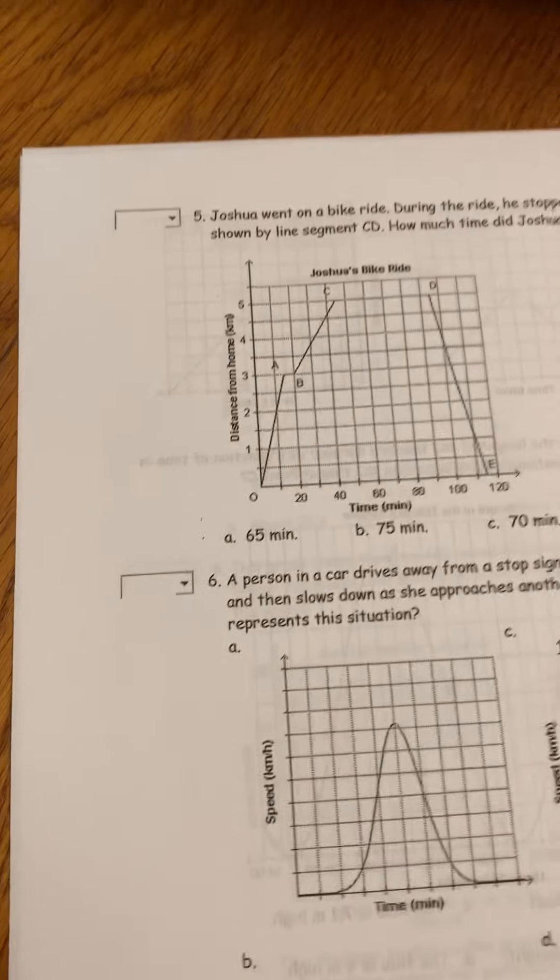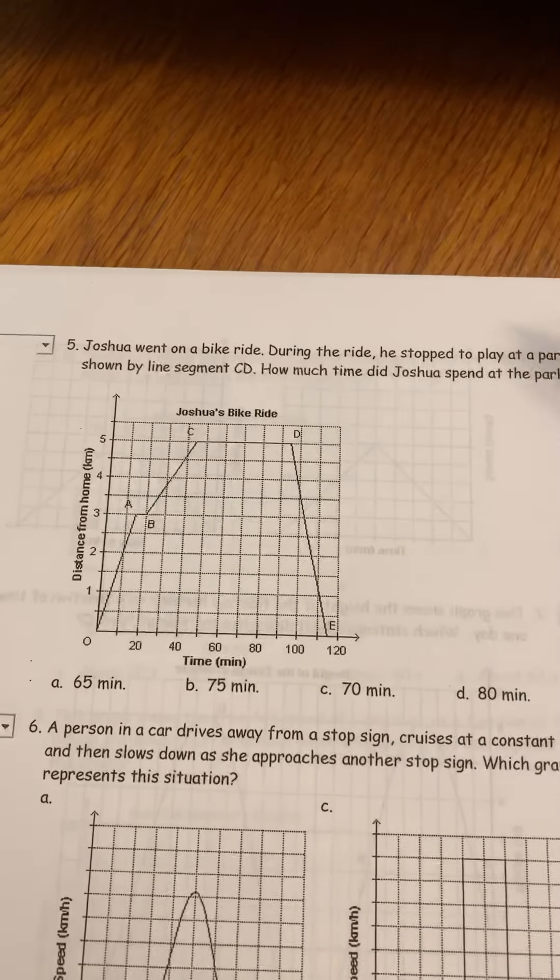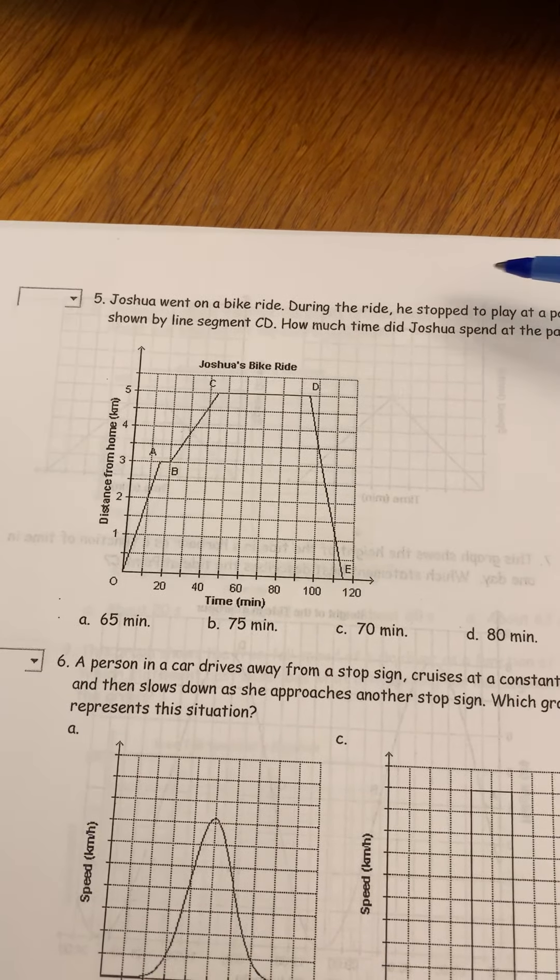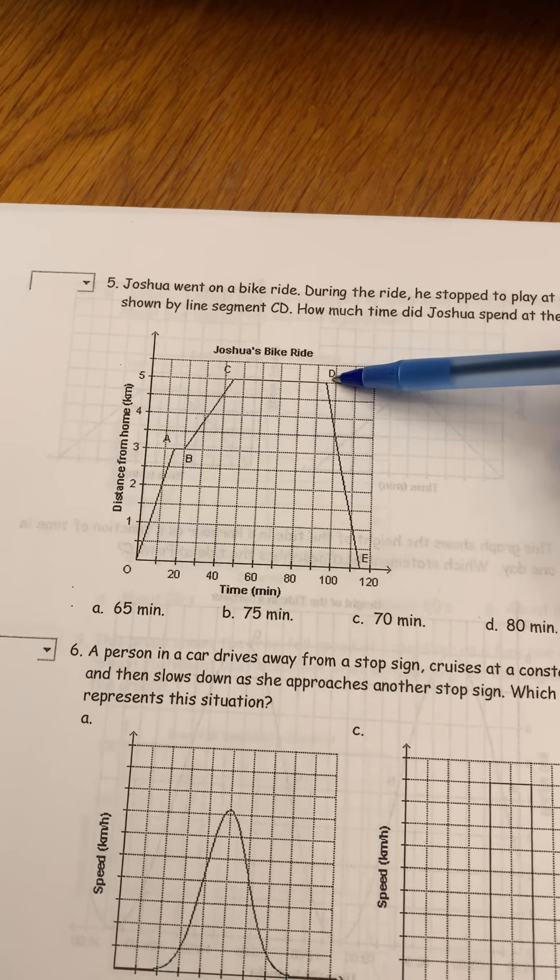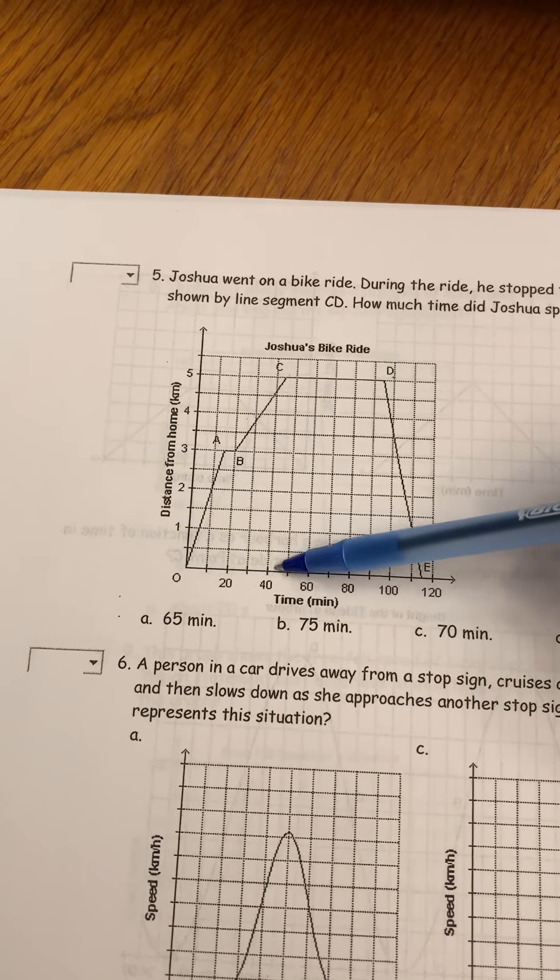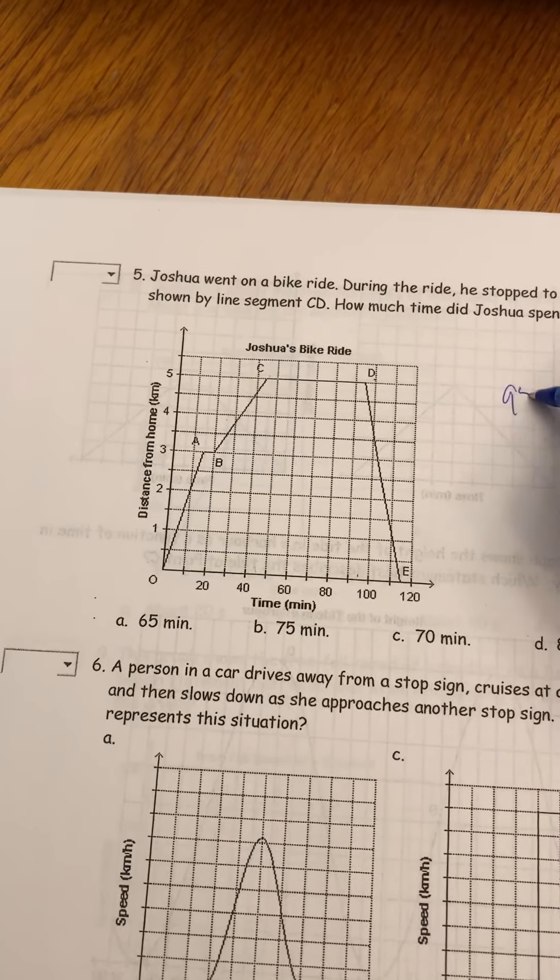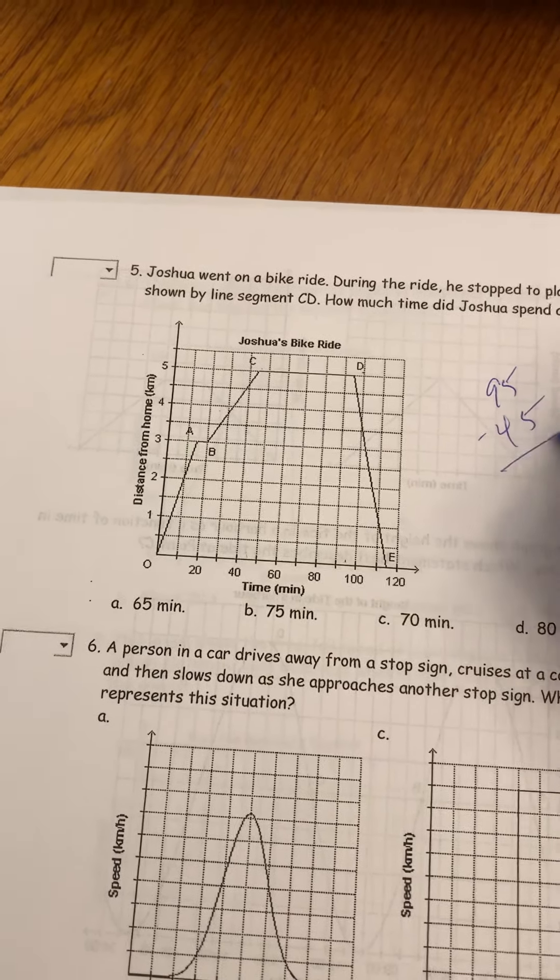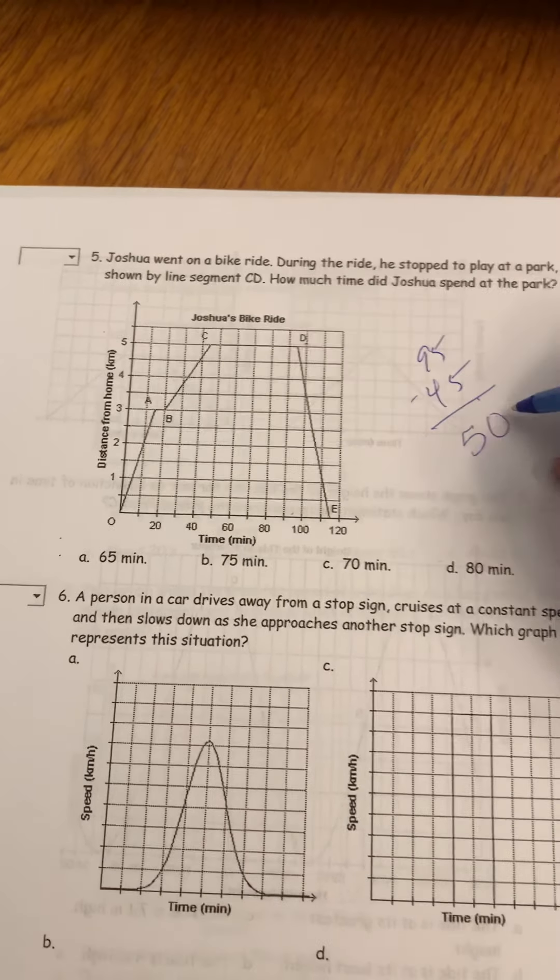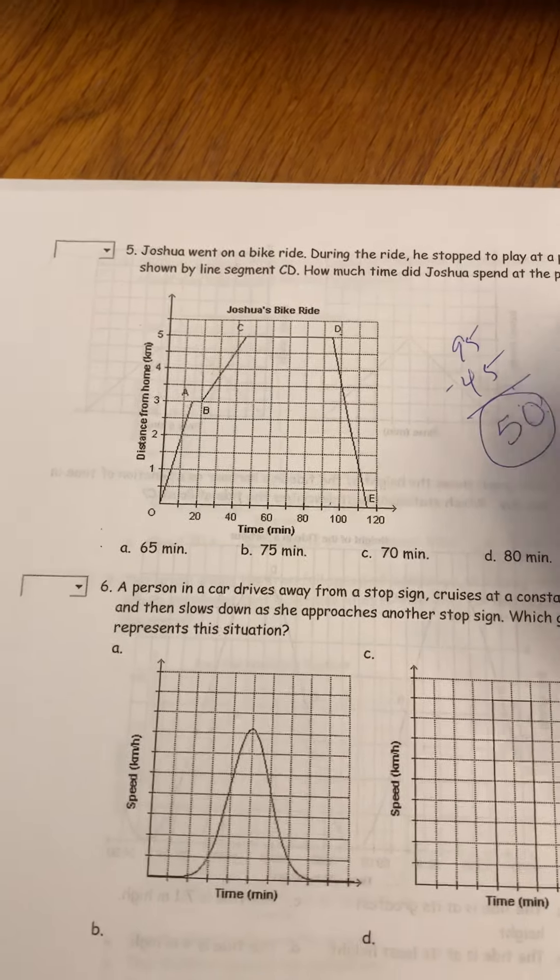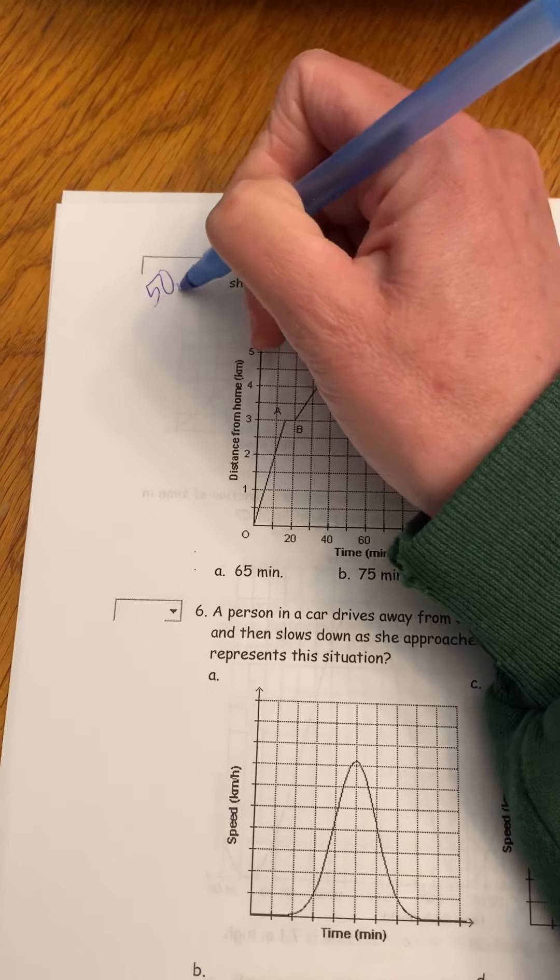Question five, same question. We're just still talking about Josh's bike ride. During the ride, he stops to play at a park. How much time did Josh spend at the park? So that's what he was doing here was stopping at the park. Here we're at about 45 minutes and here we're at about 95 minutes. So 95 minus 45, and I tell myself this every year when I use this question, there isn't a correct answer here. That's my fault. Should have been around 50-ish minutes.